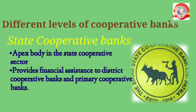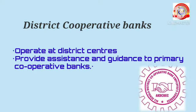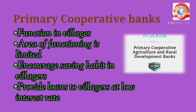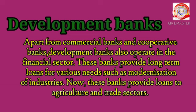Different levels of cooperative banks: First, state cooperative banks — the apex body in the state cooperative sector, providing financial assistance to district and primary cooperative banks. Second, district cooperative banks — operating at district centers, providing assistance and guidance to primary cooperative banks. Third, primary cooperative banks — functioning in village areas with limited area of operation, encouraging saving habits and providing loans at low interest rates.